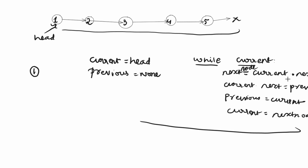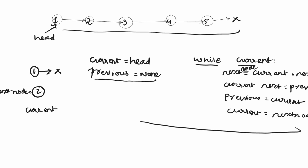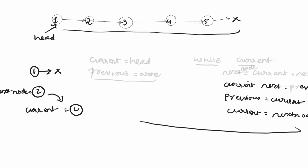Next node equal to current.next. Next node is 2. We will assign current.next equal to previous. Coding the right approach is simple — approach tells us how to write the code.